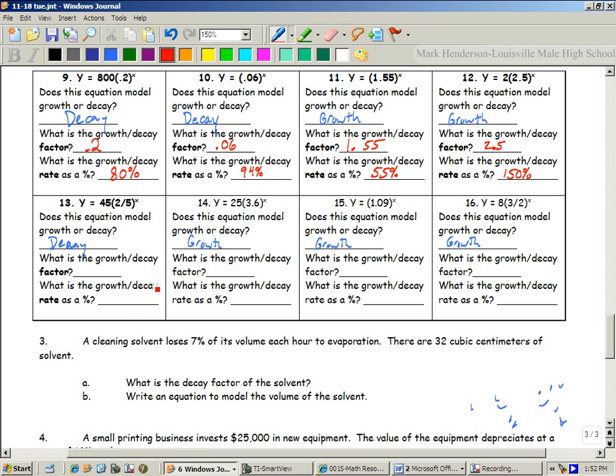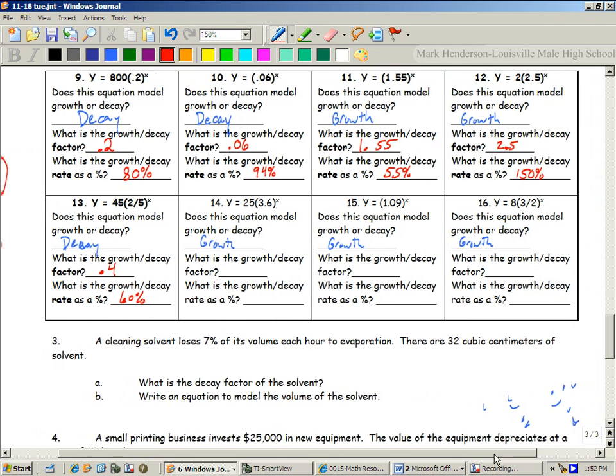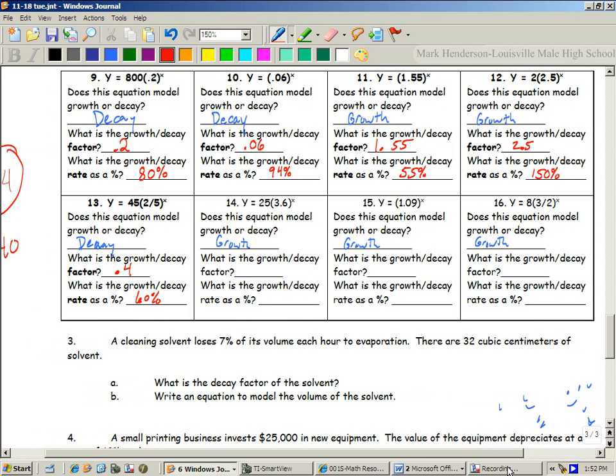What about the growth factor, the decay factor here? How much is the decay factor here? It's 0.4, right? So what is the decay rate as a percent? So this is 40%. That is 60% away from 100. Does that make sense? All right. I want you to do 14, 15, and 16 on your own, please.